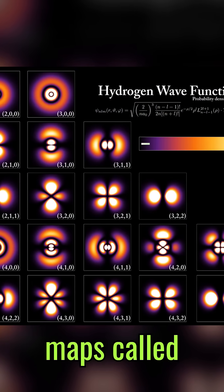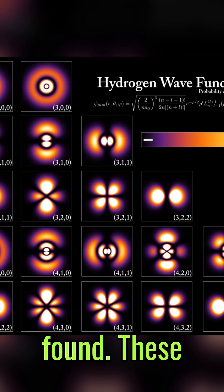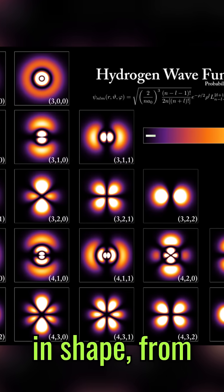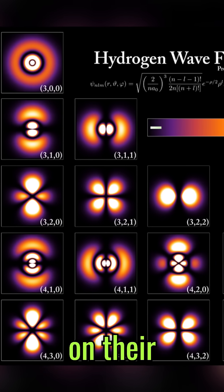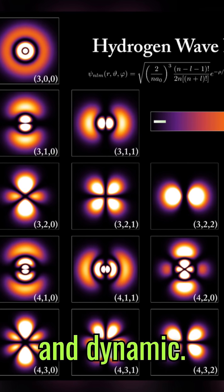Instead, we use probability maps called orbitals to predict where they're most likely to be found. These orbitals vary in shape, from simple spheres to intricate patterns. Electrons occupy these regions based on their energy, ensuring the atom's structure is both balanced and dynamic.